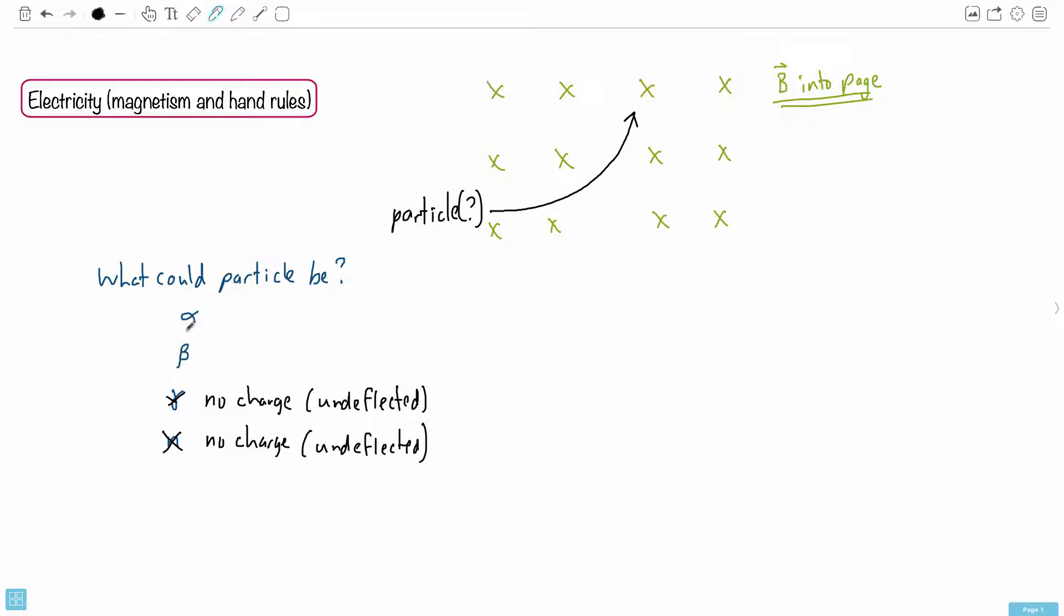So it's either a beta or an alpha. A beta is negative charge, at least a regular beta particle is, because it's an electron. An alpha particle, that's a positive charge.